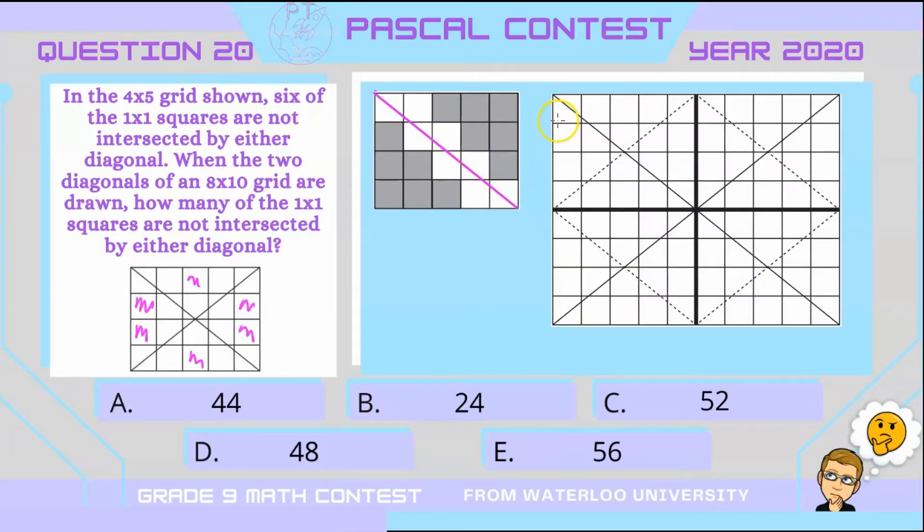So now what I'm doing is I'm taking 4 of these 4x5 grids and putting them together to make these diagonals.